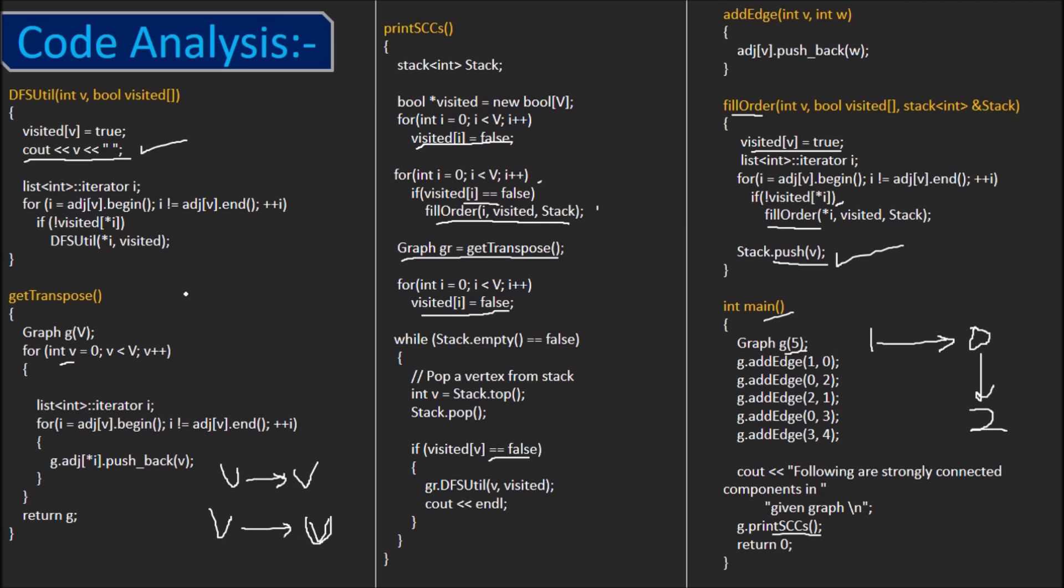Hence, applying DFS on one vertex prints all the vertices of the SCC it's part of, and then goes back to the PrintSCC function, starts printing on a new line, and the process is repeated till all the elements are popped out of the stack. I hope the working of the code is now clear.